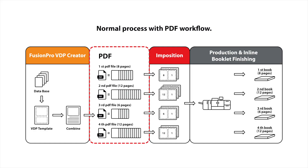When you work with variable data printing, you would usually compose the data into a PDF file before sending it over for imposition, printing and finishing. This is straightforward if all your records have the same number of pages, and your imposition software will select the fixed number of pages to do the imposition and finishing. However, when it comes to jobs with different numbers of pages per record, it becomes more complicated. The usual process would be to compose each record as a separate file and then do imposition for each file separately. This is definitely a time waster if you're working with many records.